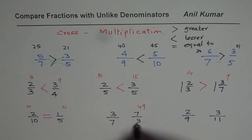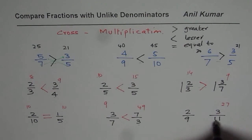7 times 7 is 49, 3 times 3 is 9, clearly 9 is less than 49. 9 times 3 is 27, 11 times 2 is 22. So, 22 is less than 27, that's it.